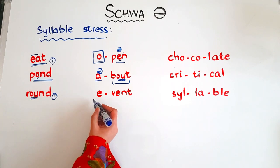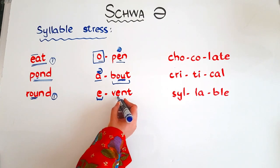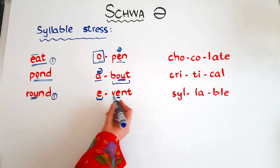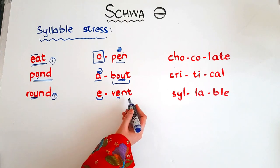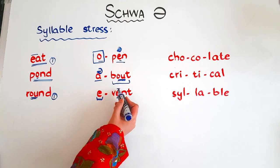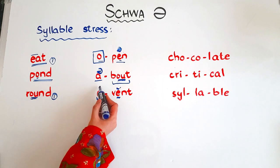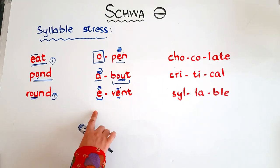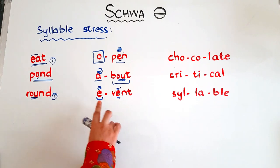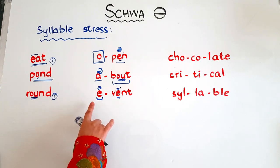Then we have the word 'event.' Do you hear the first vowel clearly or the second one? 'Event' — 'vent.' Here the 'e' in the second syllable is saying its correct sound, but in the first syllable it's saying the schwa sound. It's 'e-vent.' So again, it's a two-syllable word and the first syllable is unaccented and unstressed — that's why we have the schwa sound there.